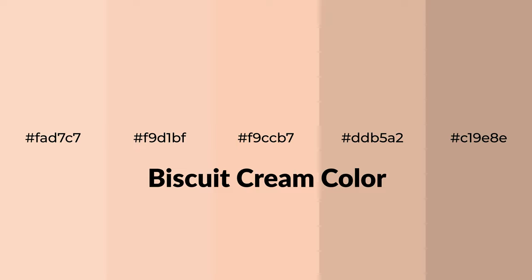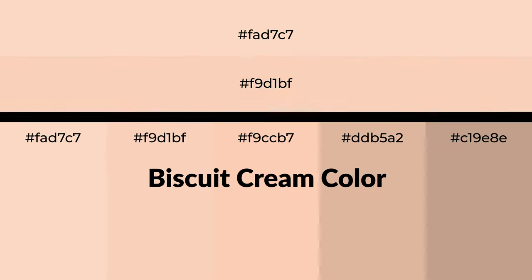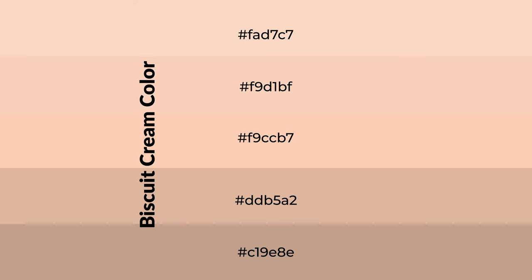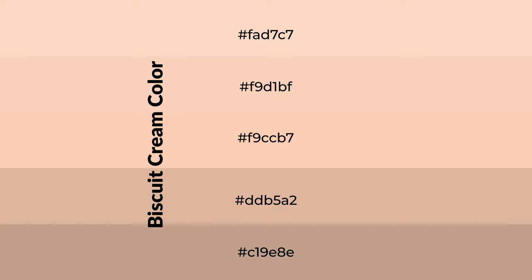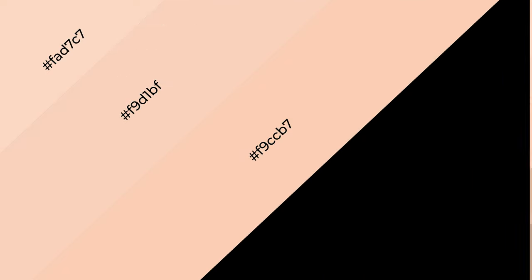Warm shades of biscuit cream color with orange hue for your next project. To generate tints of a color, we add white to the color. Tints create light and exquisite emotions. To generate shades of a color, we add black to the color, and it is used in patterns, 3D effects, and layers. Shades create depth and drama.